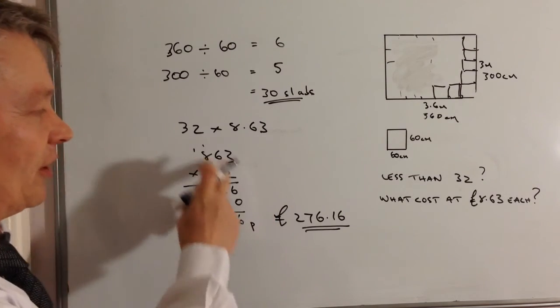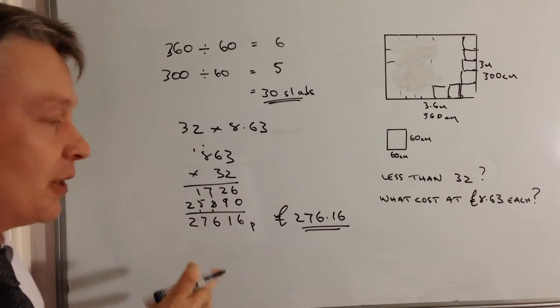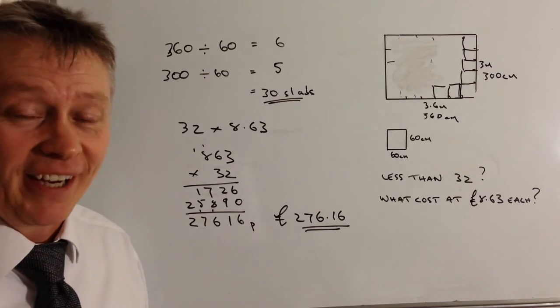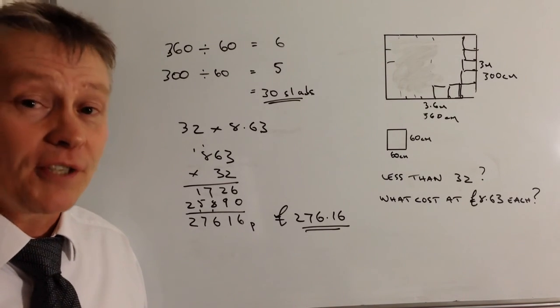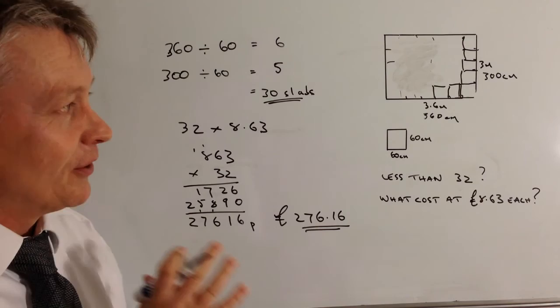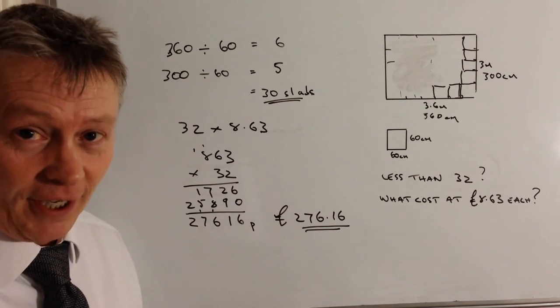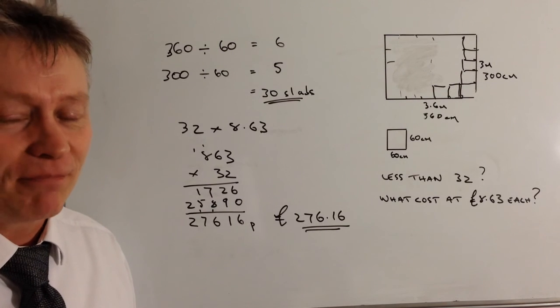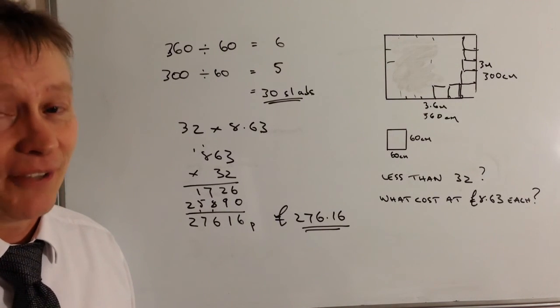And then finally the total cost, however you do this multiplication you should come out with £276.16. Okay, have a look at the website. There is a link below and you'll be able to go through to this series of questions in this playlist and have a go at these questions for yourself. Hope that's been okay. Look forward to seeing you inside the next video.